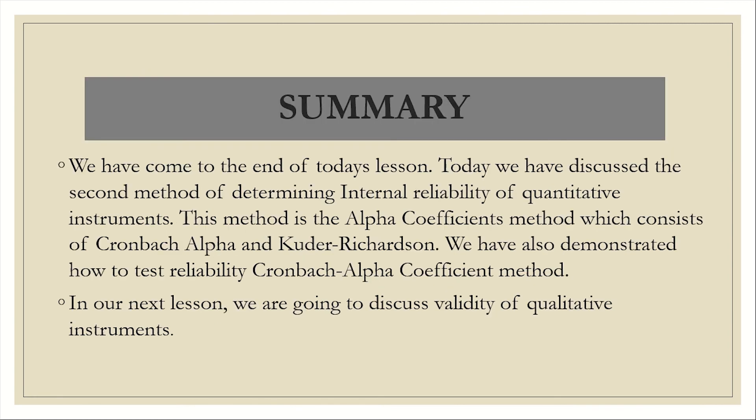With that, we have come to the end of our lesson today. We have discussed the second method of determining internal reliability of quantitative instruments, and this method is the alpha coefficient method, which consists of Cronbach alpha and Kuder-Richardson, abbreviated as KR-20 and KR-21.